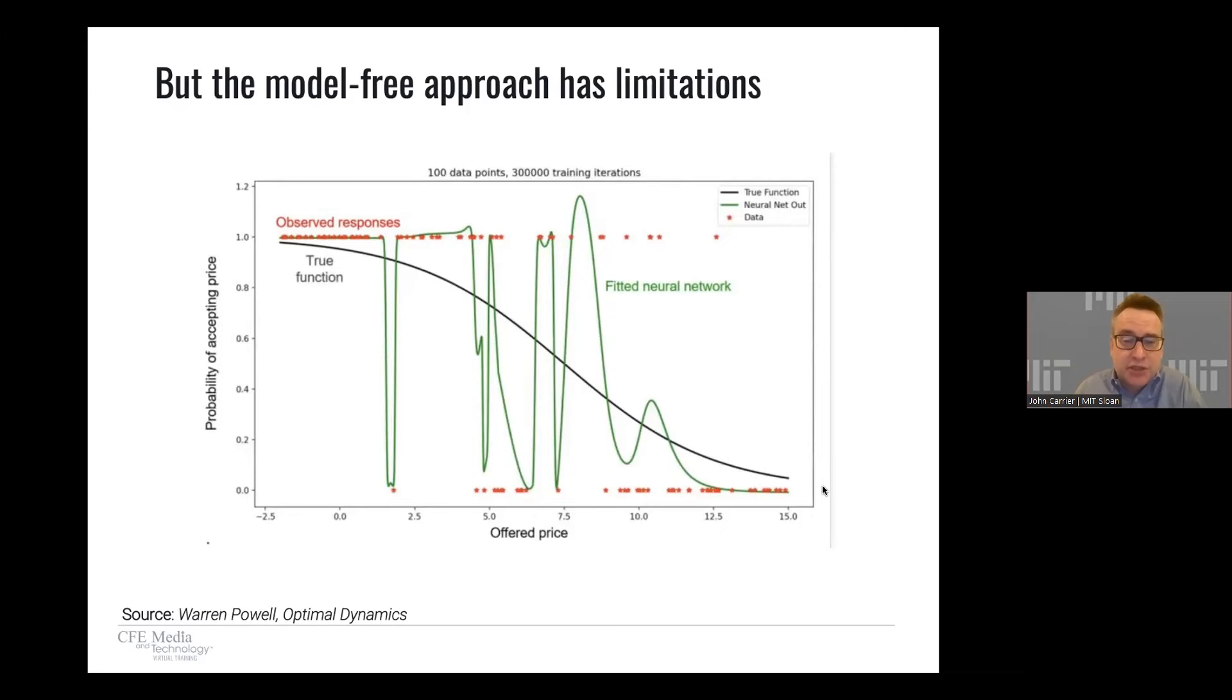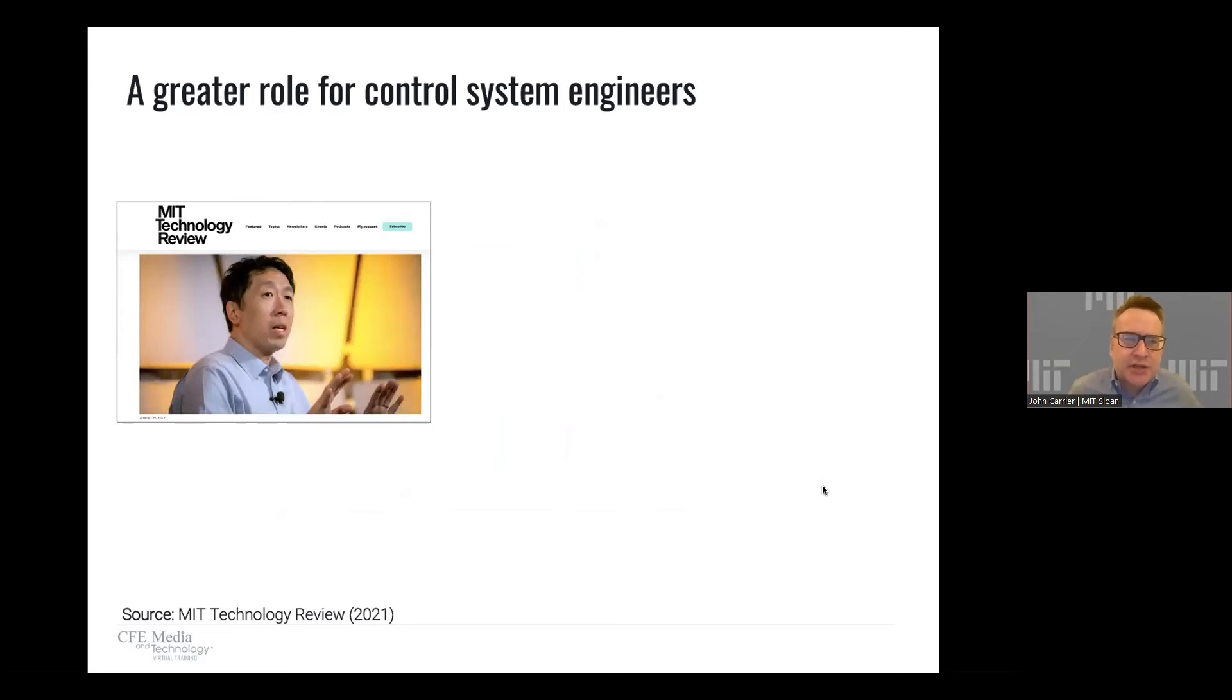Sometimes the model-free approach even has limitations of trying to recognize what's going on. It's particularly bad at recognizing data that has discontinuous points in it. Here we're simply trying to estimate the logistics equation. The neural net tries to fit those points exactly. So instead of fitting that smooth logistics curve, it creates a very bumpy representation.